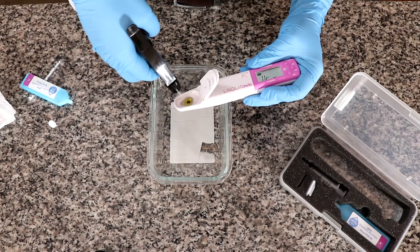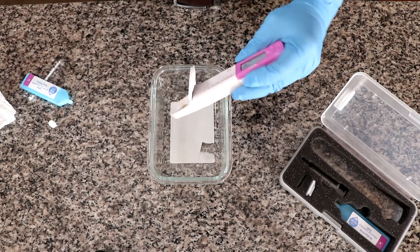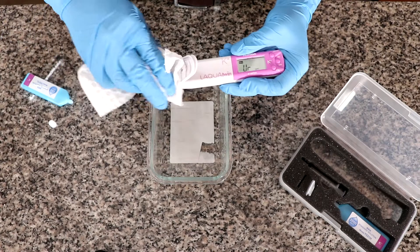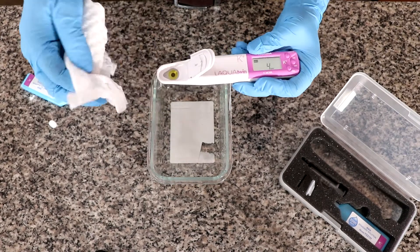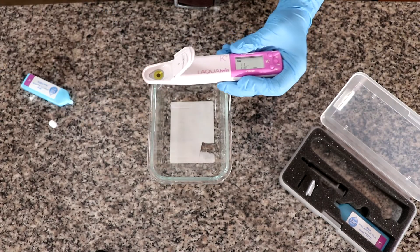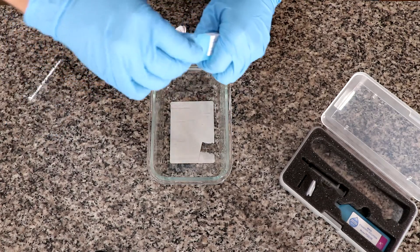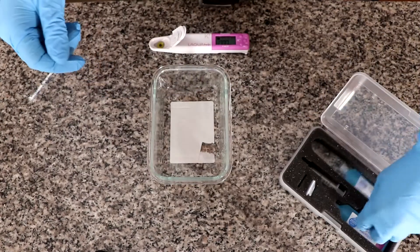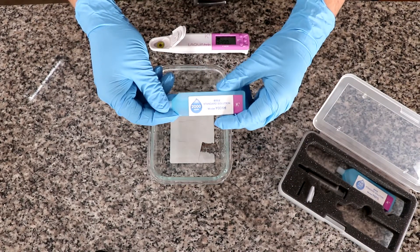Now for the second calibration point I'm going to clean again with distilled water. Now again I'm going to gently tap the electrode to get rid of as much of these droplets as I can. Now I am going to close the 150 and I'm going to get the 2000 ppm solution.